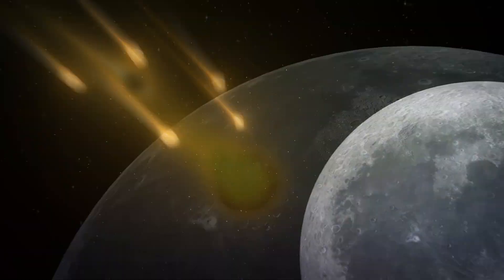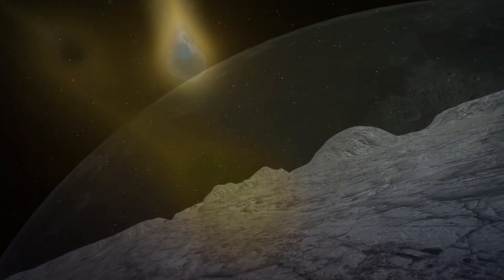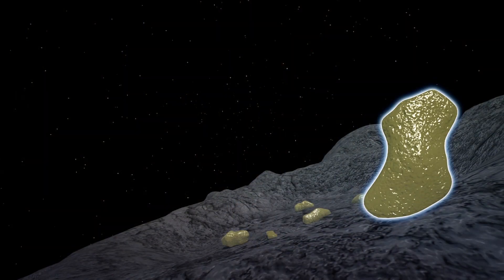Outside researchers have suggested that one possible explanation is that the substance is melted glass created from meteorites striking the surface of the moon.